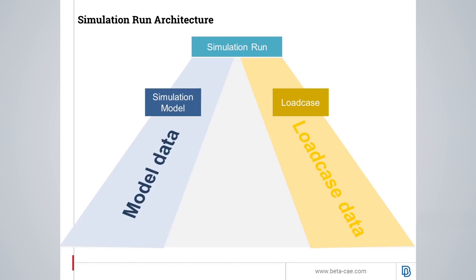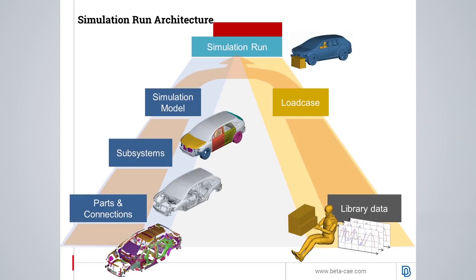The lowest levels of the model data are the parts and connections. These will be assembled into subsystems, and the combination of those becomes a model variant.